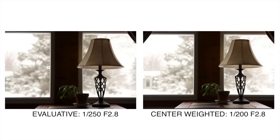Despite their differences, zone metering and center weighted metering very often give very similar exposure results. Here is a comparison showing the results of the zone metering mode on a Canon camera and the center weighted metering mode side by side — the shots are nearly identical, with just a one-third stop difference between the two. So just like zone metering, center weighted metering is designed to be used for average all-around shooting.